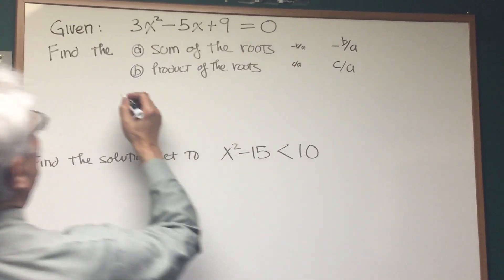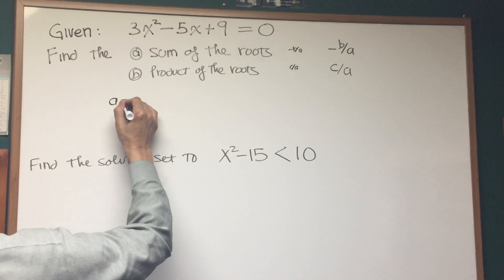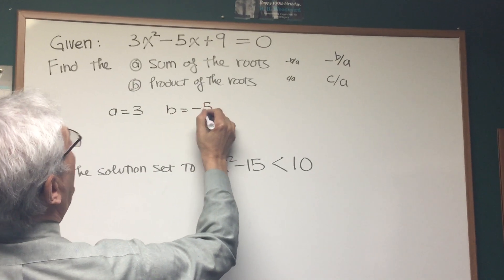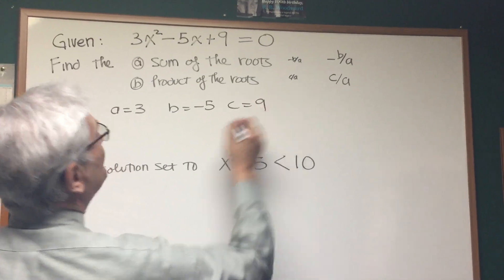So given this quadratic formula, we identify what the coefficients are. a equals 3, b equals -5, and c is equal to 9.